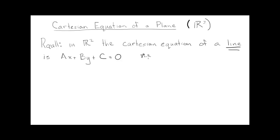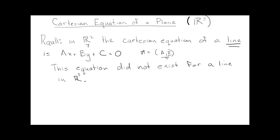Where we got these numbers A and B from the normal vector AB. But this only existed in R². This equation did not exist for a line in R³. And the reason was the normal vector is not unique. There's lots of normal vectors to a line in R³, and they're not all perpendicular or parallel. They're not all scalar multiples of each other.